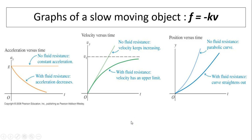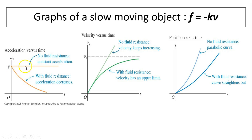Here are the graphs for a slow-moving object, where f = −kV. When the object is first dropped, acceleration equals g. As the object falls, acceleration decreases and eventually approaches zero but never actually reaches zero. For velocity, initial velocity equals zero. The horizontal line indicates no fluid resistance, where a_y = g (downward positive), and velocity increases at the same rate — the slope of that line is g. With air resistance, v approaches a constant called V_t, terminal velocity.